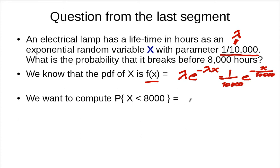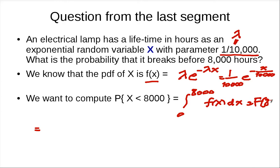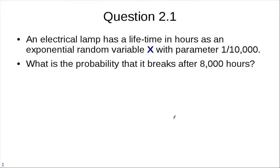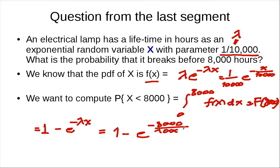We want to compute this. We'll take the integral from 0 to 8,000 of f(x) dx. But we have already computed that — it's F of 8,000, which is 1 minus e to the minus lambda x. So this is going to be 1 minus e to the minus 8,000 over 10,000, and that's 1 minus e to the minus 0.8, which is roughly about 0.55.